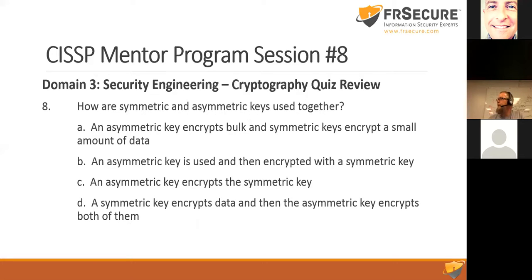How are symmetric and asymmetric keys used together? An asymmetric key encrypts bulk — hopefully not, because asymmetric is slower. An asymmetric key encrypts a small amount of data. An asymmetric key encrypts the symmetric key — that's more likely. A symmetric key encrypts data and then the asymmetric key encrypts both of them. C is the right answer — an asymmetric key encrypts the symmetric key. That would be true in the Diffie-Hellman key exchange protocol.